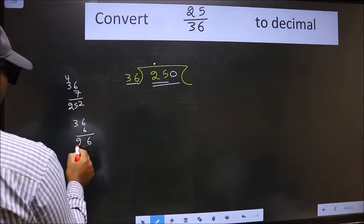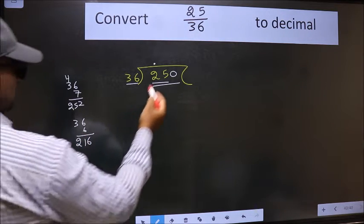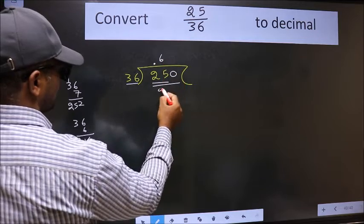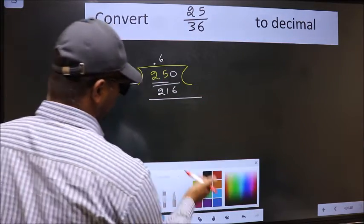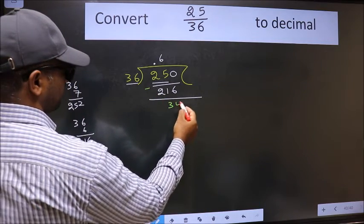6, 3, is 18. We get 2, 1, 6. So 36, 6 is 2, 1, 6. Now we should subtract. We get 34.